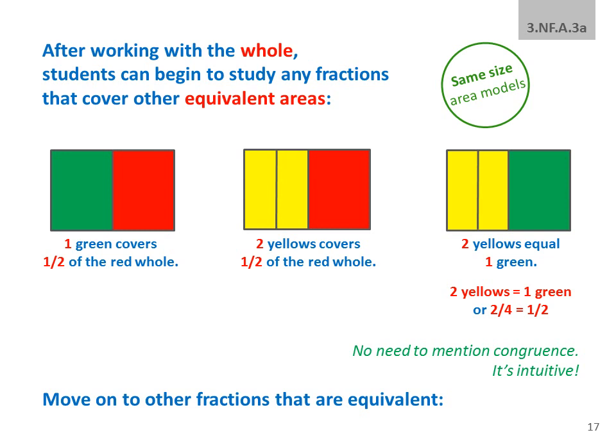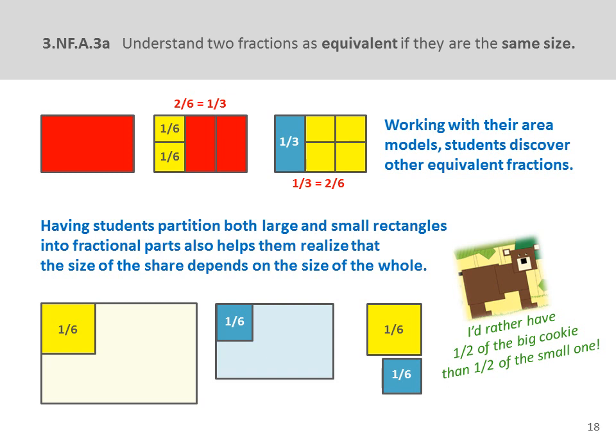After working with fractions equivalent to the whole, students can begin to study any fractions that cover equivalent areas. This area model compares 1 half and 2 fourths, and hopefully most students have already noticed that 2 fourths is equal to 1 half. Students should work with their area models frequently so that they themselves can discover equal portions of the whole. At the top of this slide, we're looking at 2 sixths and 1 third, which both cover the same portion of the whole, so the number 2 sixths equals the number 1 third. Asking students to partition different-sized rectangles into fractional parts helps them understand that fractions define equal portions of a whole, but the size of the portion depends on the size of the whole.